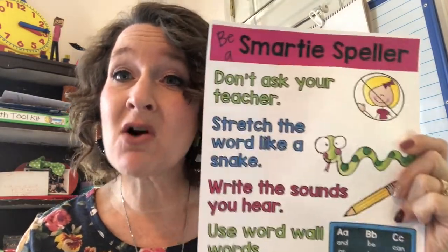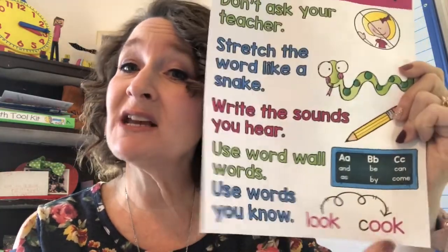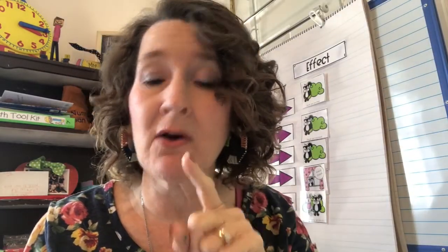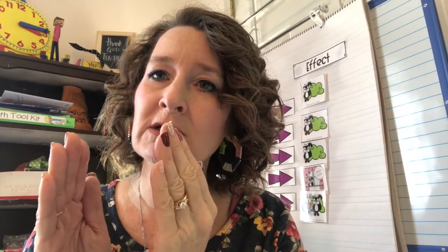Now it's your time to get out your writing and work on your next page — tell us the next thing that happened in your story. Remember to be a smarty speller: stretch out your words, write down the sounds you hear, use the things we've learned about spelling words this year. Be a really super smarty speller and always leave spaces between each word so we can tell where one word stops and the next starts. Does your writing have to be perfect? No, but do the best you can. I can't wait to see what you write next in your story.